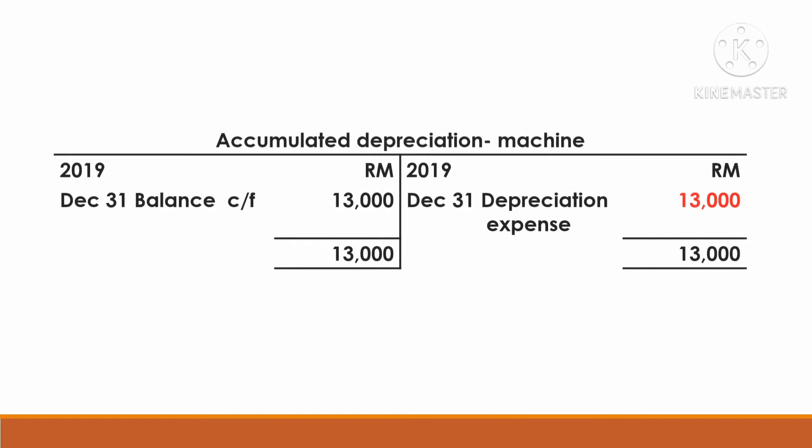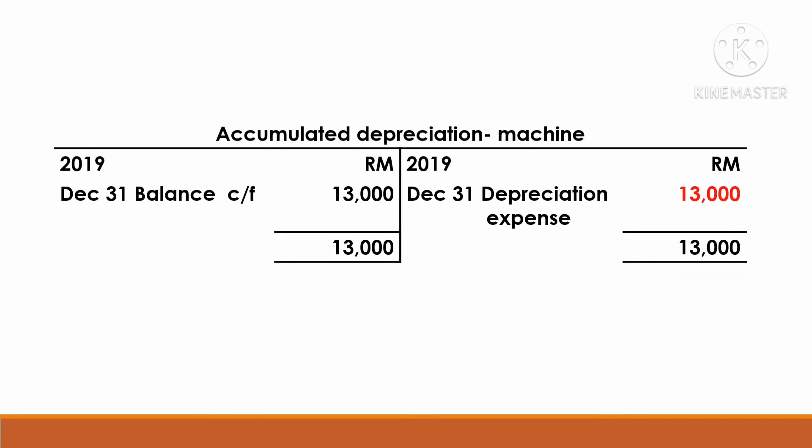Now we prepare the accumulated depreciation account for the machine. We record RM13,000 on the credit side, with the details referencing depreciation expense. At the end of the accounting period, we close the accumulated depreciation account and record it in the financial statements.